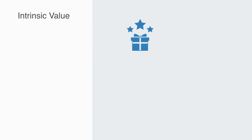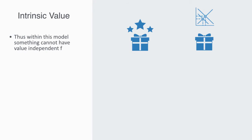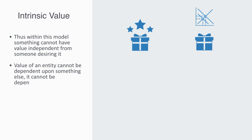Utility always defines value in relation to someone. Thus, within this model, something can't have a value independent from someone desiring it, which is essentially the definition of extrinsic value. When value is defined by the interaction between different well-defined utility functions, this means that the thing does not have any intrinsic value. Thus, the value of an entity cannot be dependent upon something else — it cannot be dependent upon the context, as we illustrated with our banana example.